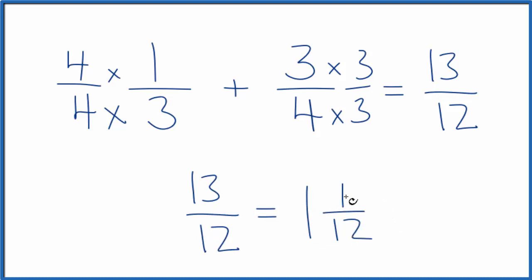1 times 12, that's 12 plus 1 is 13, so 13 over 12. So you could also say that 1/3 plus 3/4 equals 1 and 1/12.